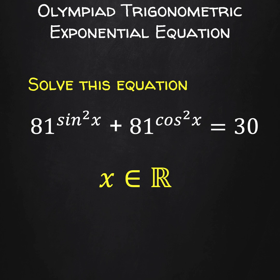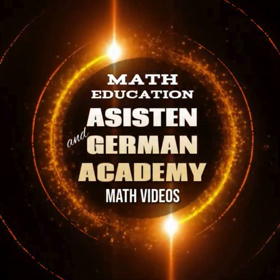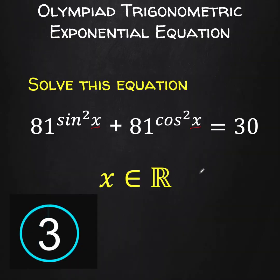In this video, we are going to solve this trigonometric exponential equation: 81 raised to sine squared x plus 81 raised to cosine squared x equals 30. Find the value of x. Notice that in this problem, we are solving for x, which is the angle of the trigonometric function. You can pause the video and see if you can solve this Olympiad problem.